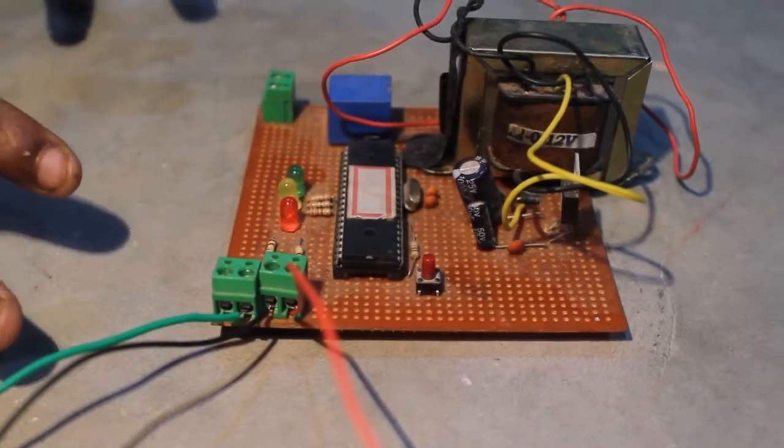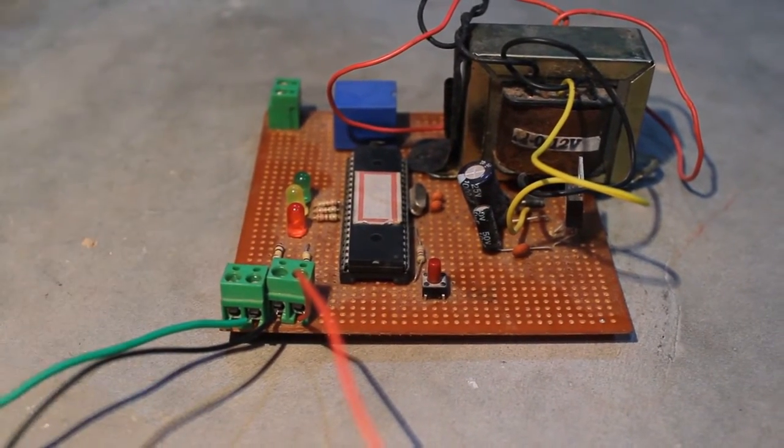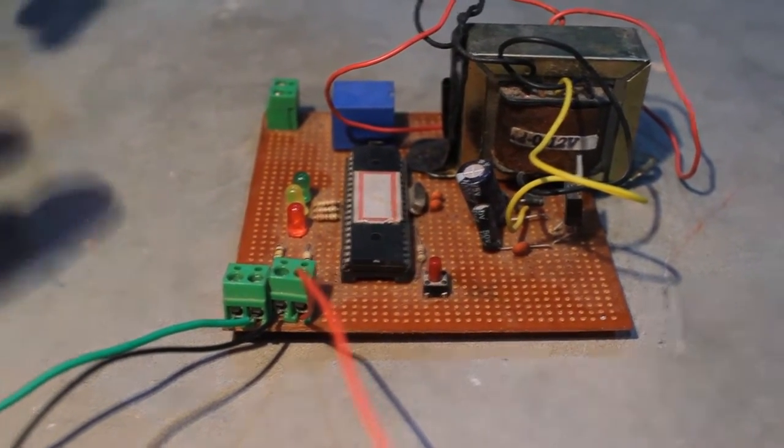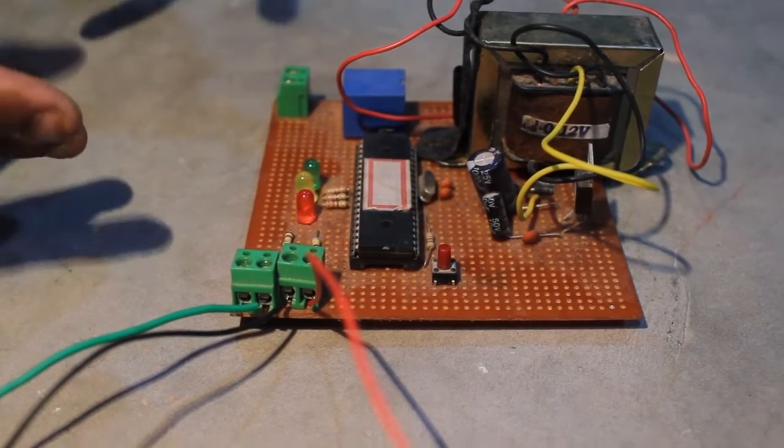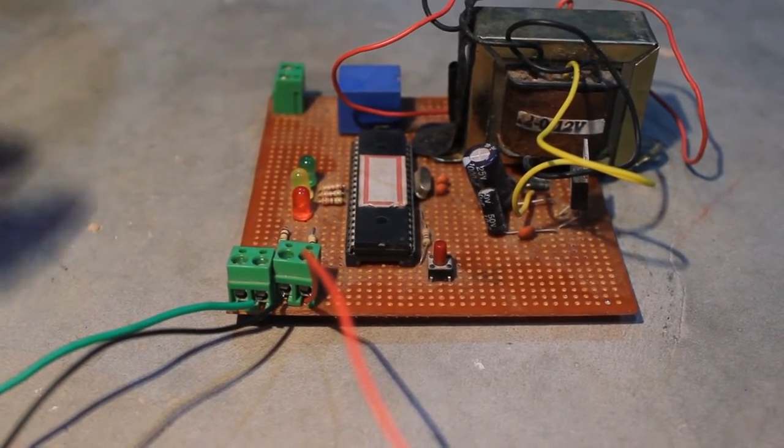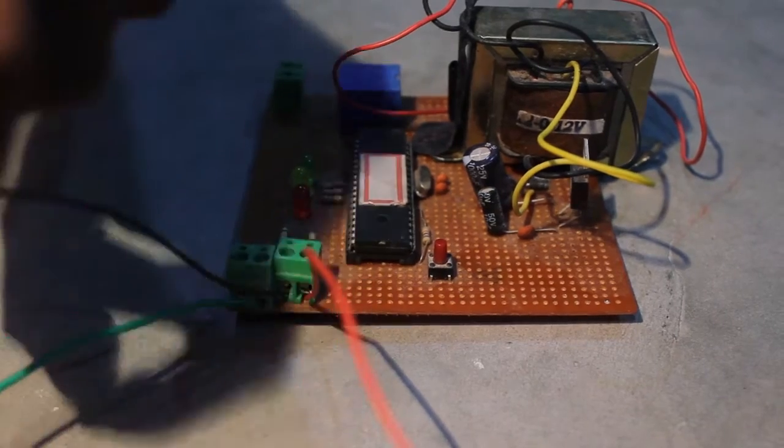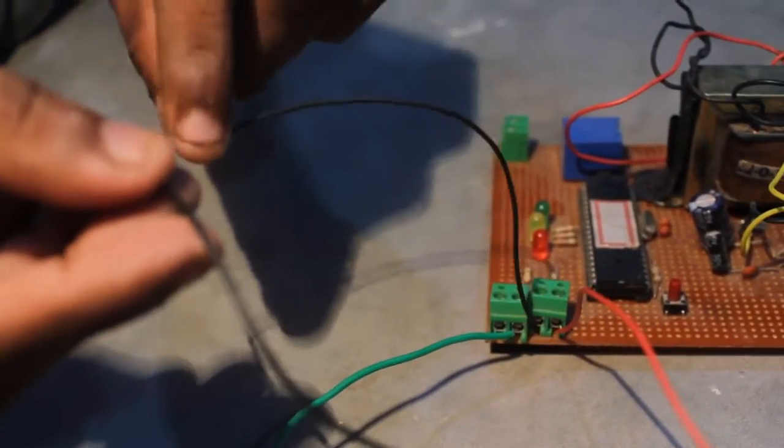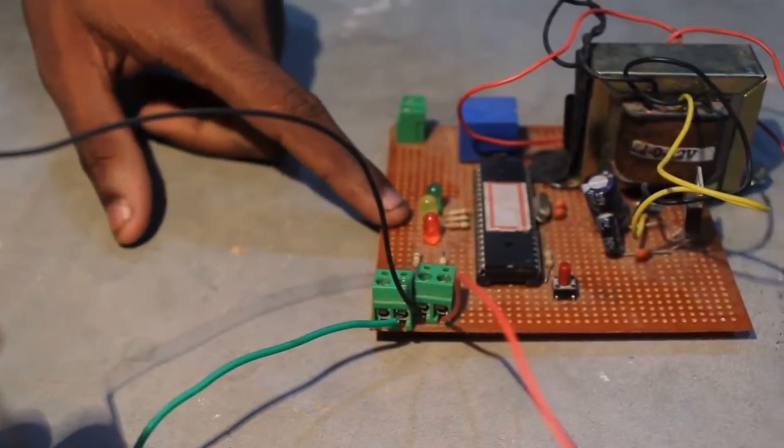Now initially consider that the water is empty in the tank. So the relay driver will be active and the motor will run. The water gets filled, and when the water level reaches this black wire, we will get the yellow light glow.